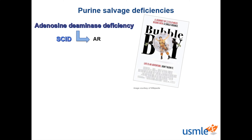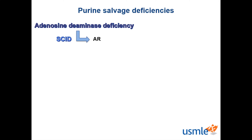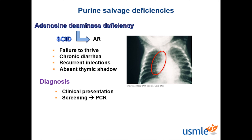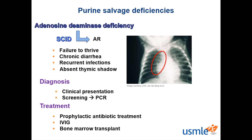SCID is also known as bubble boy disease, popularized in movies and TV dramas. It results in failure to thrive, chronic diarrhea, and recurrent viral, bacterial, fungal, and protozoal infections. A classic sign is an absent thymic shadow on chest X-ray. Diagnosis usually occurs around a few months of age with recurrent infections. Screening is performed in some states through PCR measurements of T cell receptor concentrations, and can also be done with a family history. Treatment involves prophylactic antibiotic treatment, IVIG, and bone marrow transplant for curative measures. Live vaccines should be avoided in these individuals.